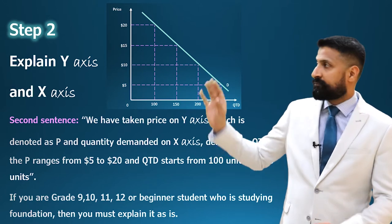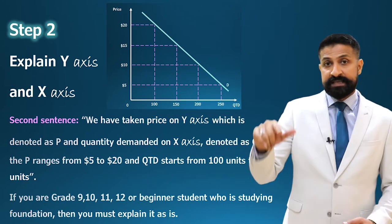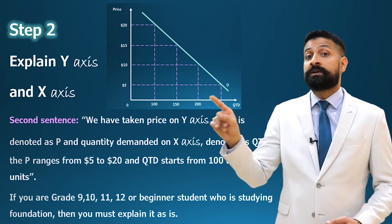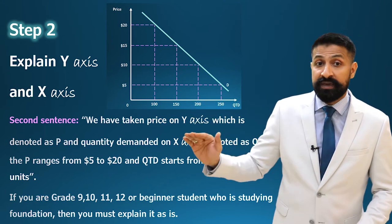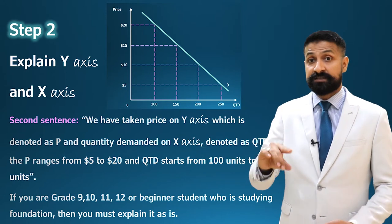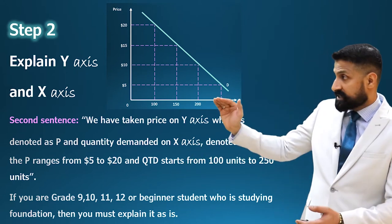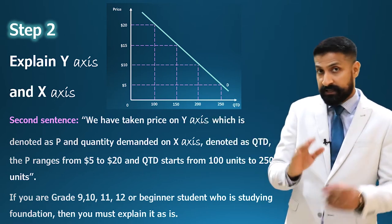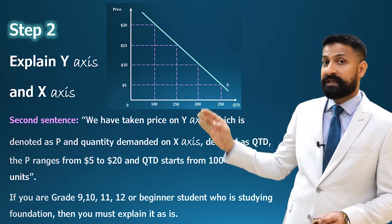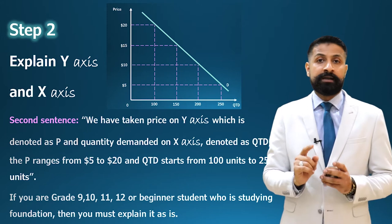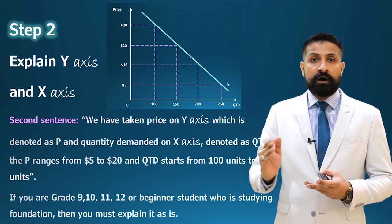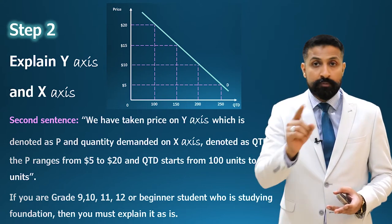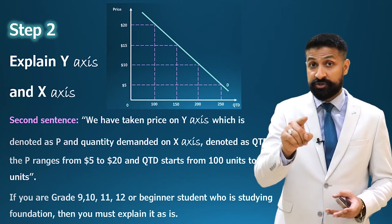Step two: you have to explain both the X-axis and Y-axis — what you have taken on each axis. In the second sentence you will explain: 'We have taken price on the Y-axis, denoted as P, and quantity demanded on the X-axis, denoted as QTD.' The price ranges from 5 to 20, and QTD ranges from 100 to 250. Whether you are a grade 9, 10, 11, 12 student, or even a master's student studying foundations of economics, you must explain both axes in your graph explanation.